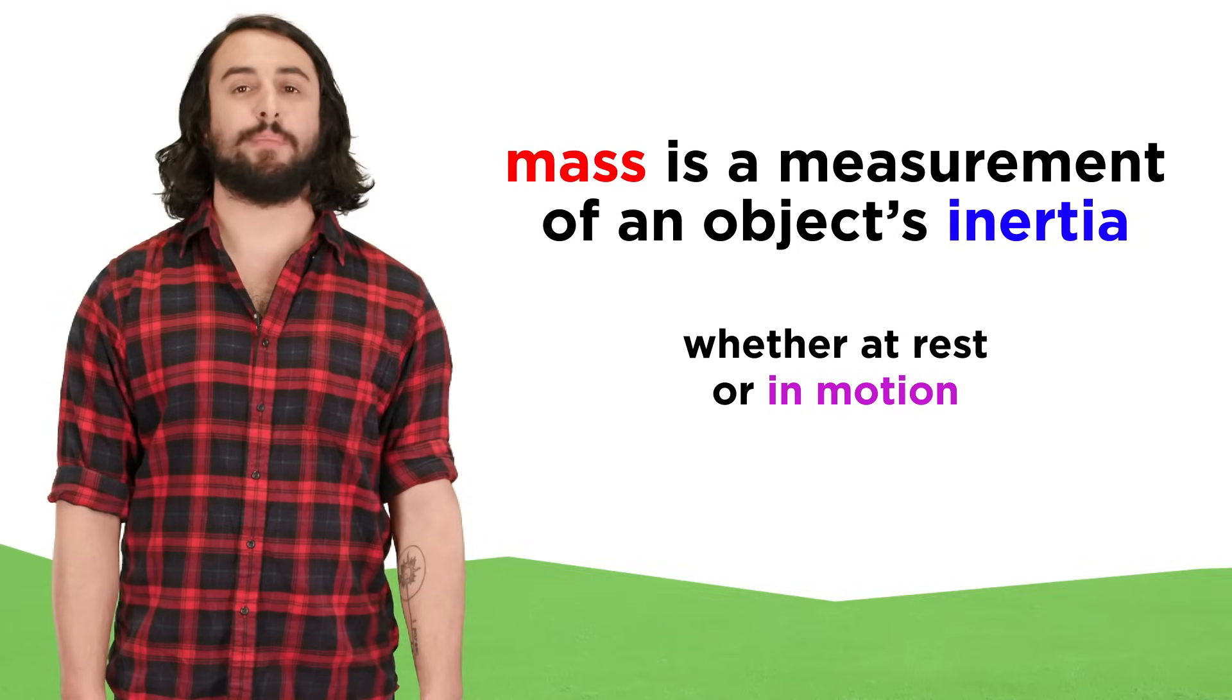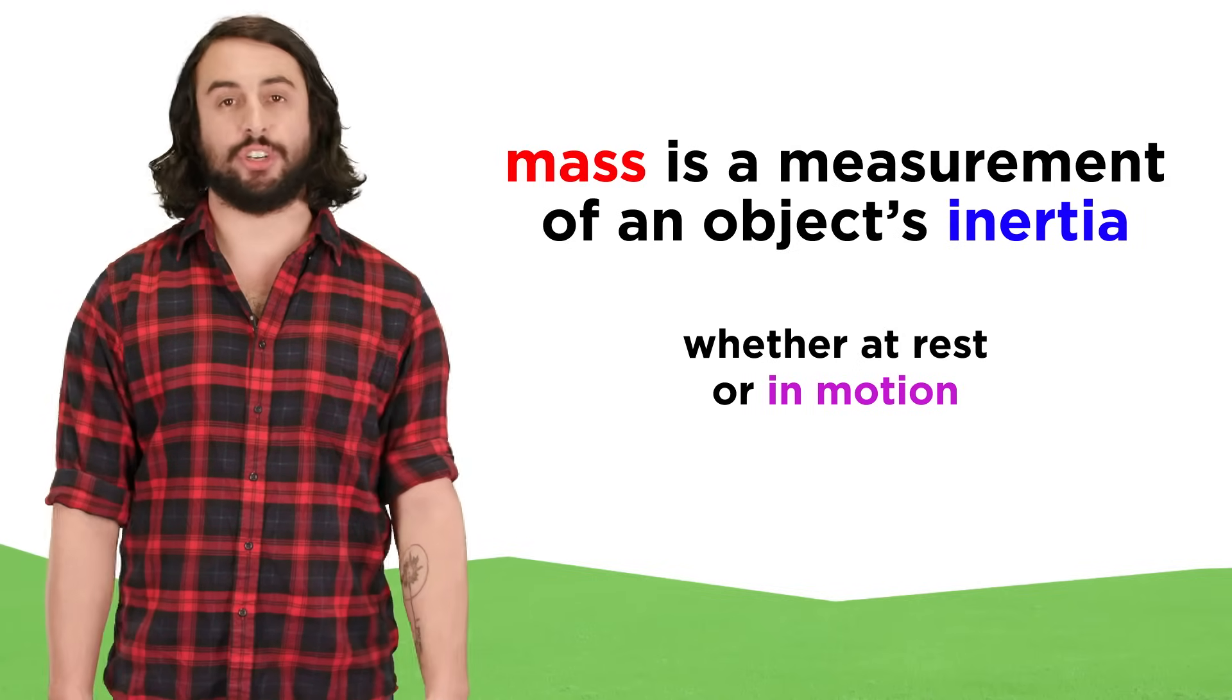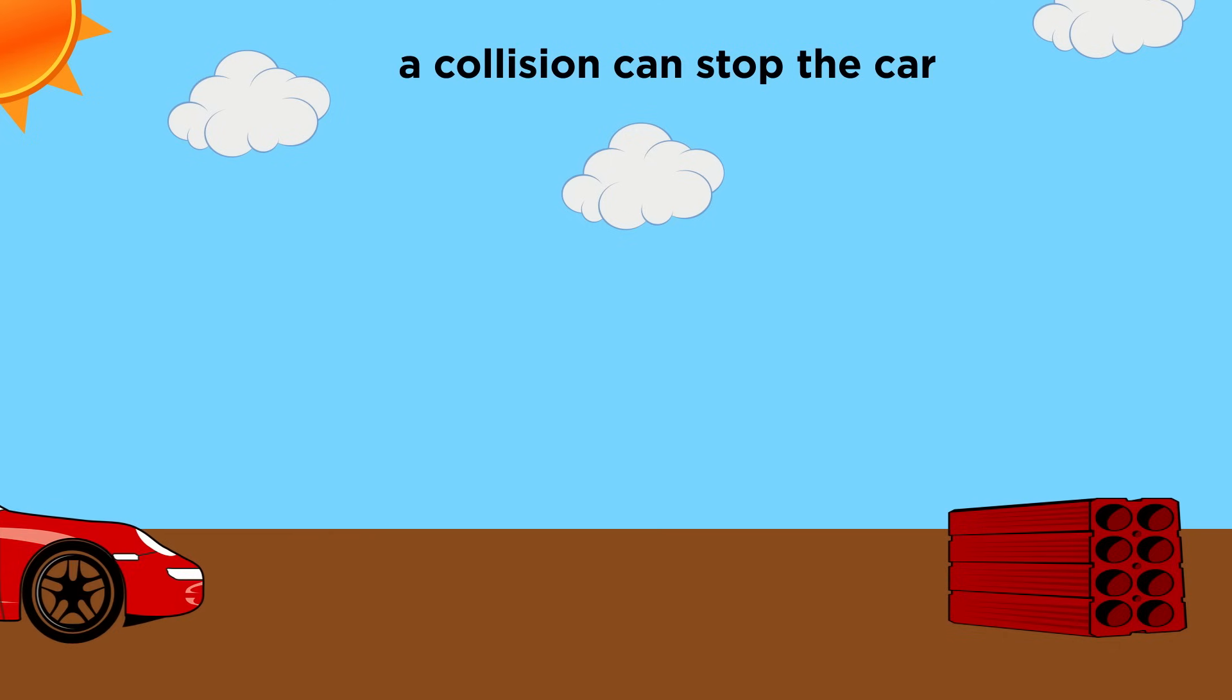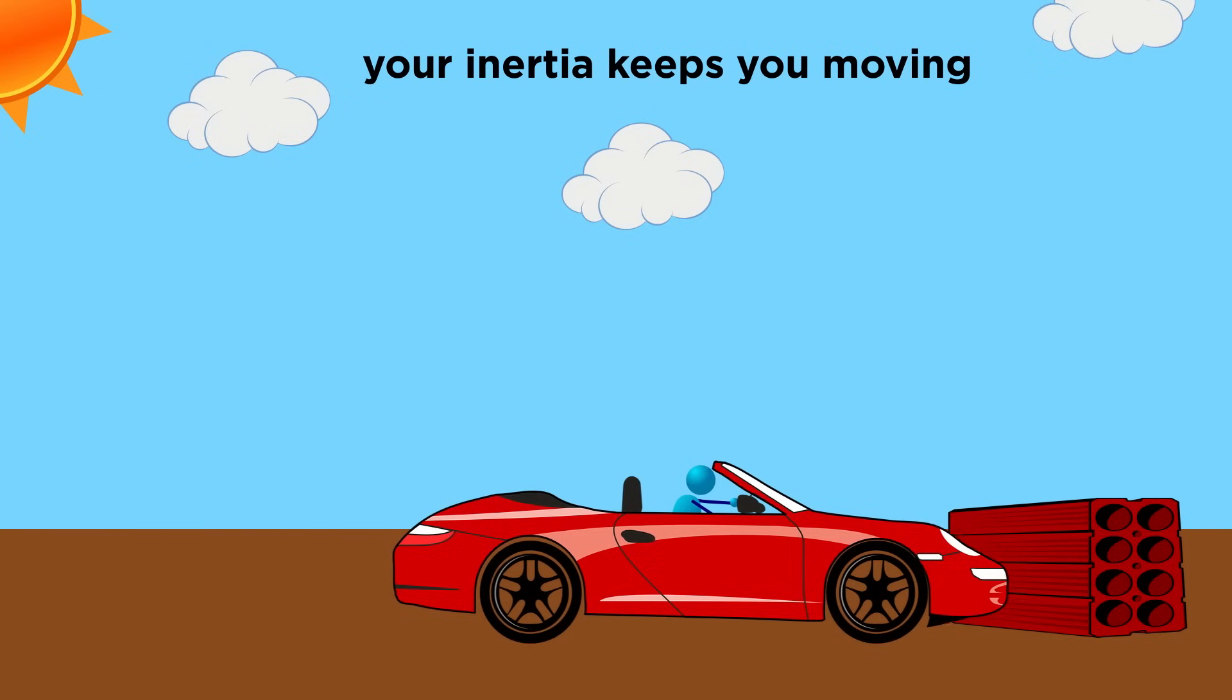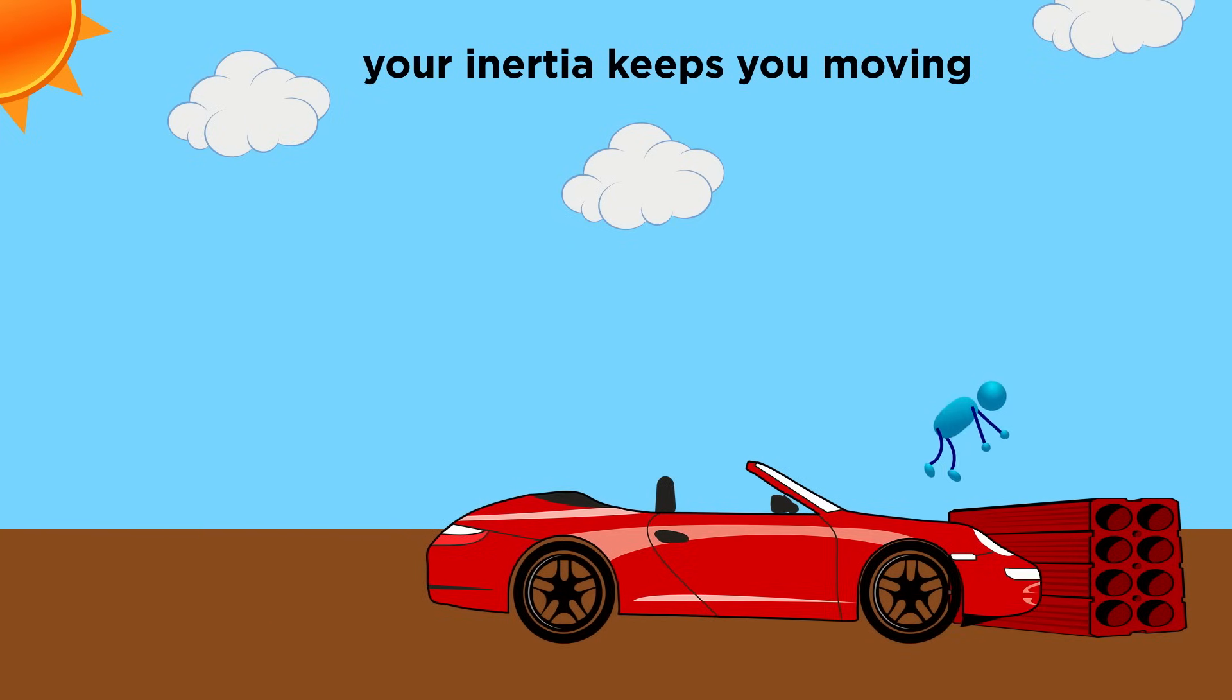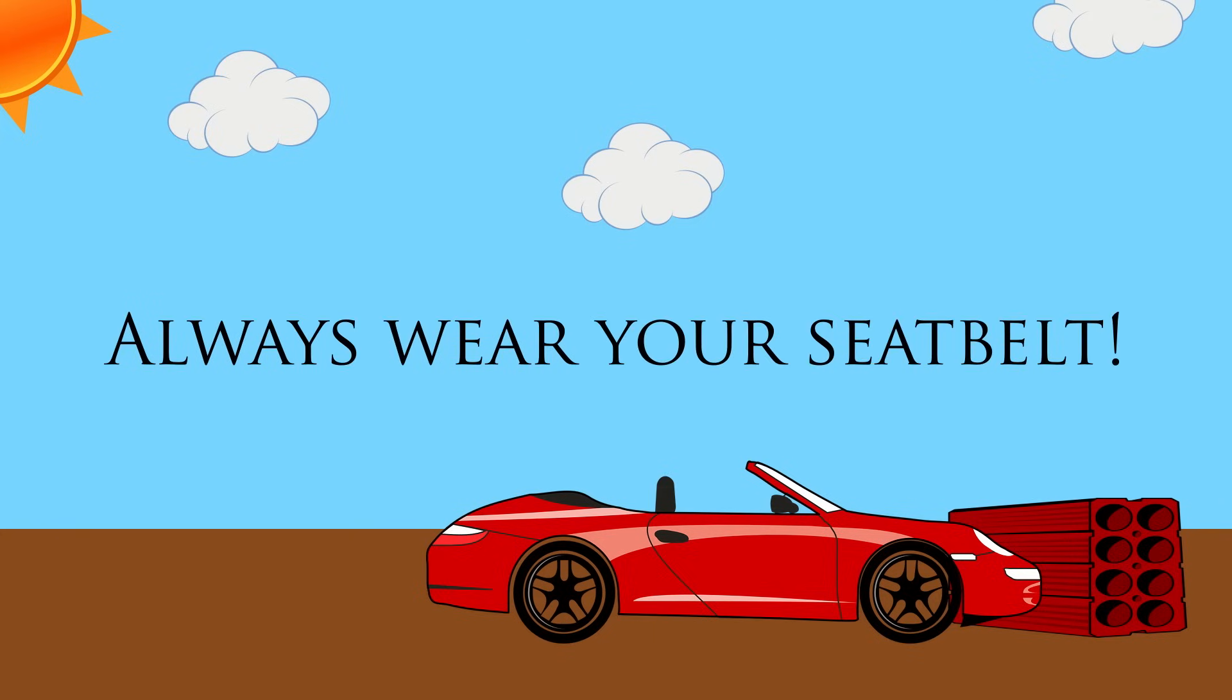As we said, this applies to objects that are already in motion as well. If you get into a car accident, the force of impact will stop the car, but your inertia dictates that your body will tend to continue moving, and this is why we wear seat belts, because without them we might continue moving right through the windshield, which wouldn't be very fun.